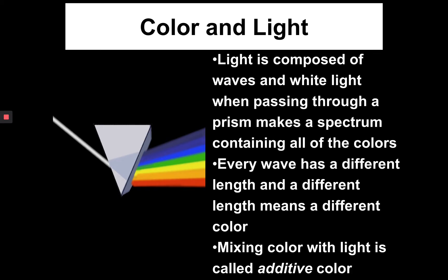Color in light is called additive color. Mixing color with light — because every wave has a different length and every length means a different color — is called additive. Interestingly, additive colors have three primaries that are different than pigment, and that is red, blue, and green.